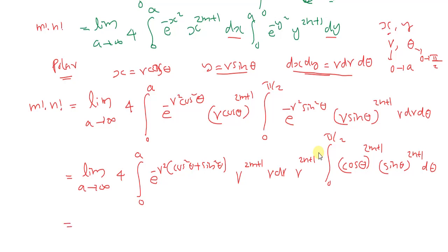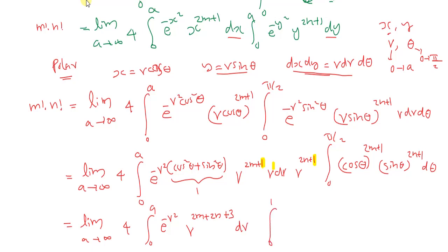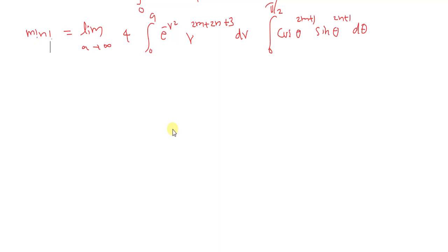This simplifies to: limit as a goes to infinity, 4 times the integral from 0 to a of e raised to minus r squared, since cos squared theta plus sin squared theta equals 1, times r raised to 2m plus 2n plus 3, dr. Then the theta integral from 0 to pi by 2 of cos theta raised to 2m plus 1 times sin theta raised to 2n plus 1 d theta. We have the relation Gamma(z) equals 2 times the integral from 0 to infinity of e raised to minus t squared, t raised to 2z minus 1, dt, so I can use this equation here.